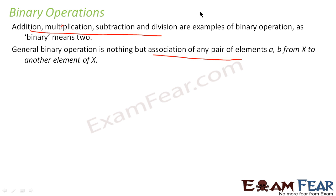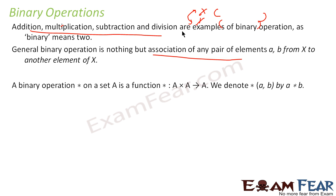If you have one set of elements X and another set Y, and there is a relation between X and Y, that is called a binary operation. For example, the binary operation star on a set A is a function star: A cross A to A, where the relation between any two objects a and b in A is written as a star b.